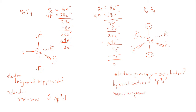Looking at just the bonding electrons, the four bonding domains are all along the equatorial axis, giving xenon tetrafluoride a square planar molecular geometry.